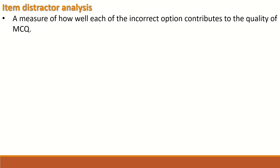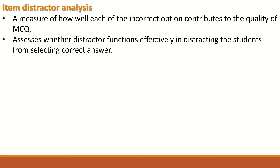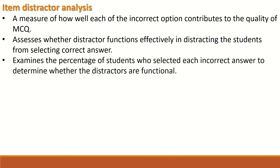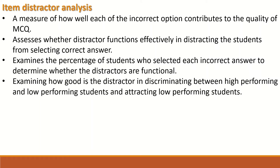Item distractor analysis is one way to measure how well each of the incorrect options in a multiple choice question contributes to the quality of the question. It assesses whether the distractor functions effectively in distracting the student from selecting the correct answer. It examines the percentage of students who selected each incorrect answer to determine whether the distractors are functional, and how well the distractor discriminates between high performing and low performing students, attracting low performing students.